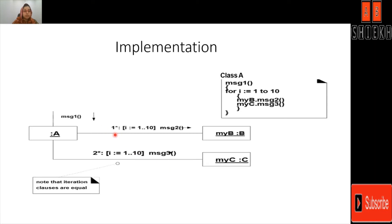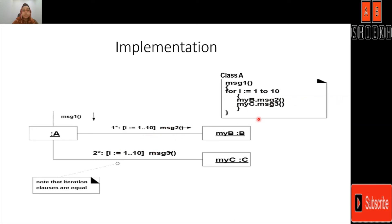In this implementation example, this is an iterative message where i equals 1 to 10 and message 2 is also a recurrence iteration with i equals 1 to 10, and then message 3 will flow. For message 1 implementation, on the link we have mentioned a bit of implementation — message 1 gets us to class A, and then in an iterative manner a for loop goes from i equals 1 to 10, calling message 2 first and then message 3.